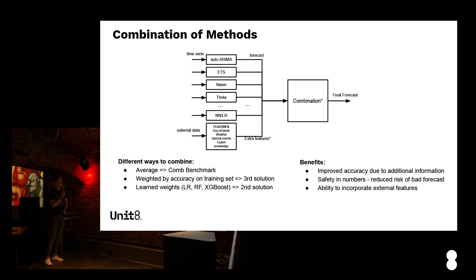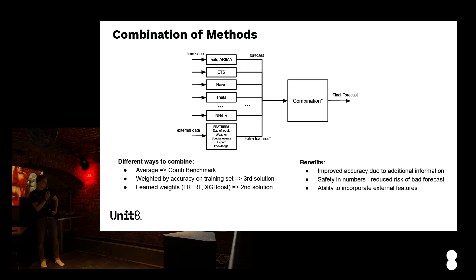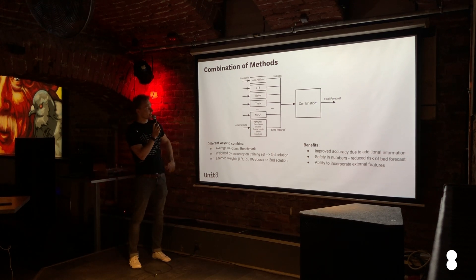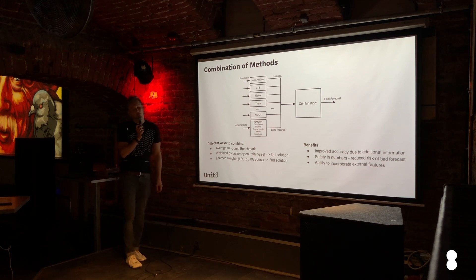Why does this combination approach work? Mainly due to improved accuracy from additional information gain — different statistical models try to capture different patterns in the time series, and averaging between them adds information to the full model. When we have multiple forecasters, we reduce the risk of a bad forecast, which is very important in practice. People in charge care less about getting one or two percent better on average, and more about reducing the long tail — the probability of producing a bad forecast. If you use linear regression, random forest, or XGBoost in the combination, you can also embed external data like day of the week, weather, special events, or expert knowledge.